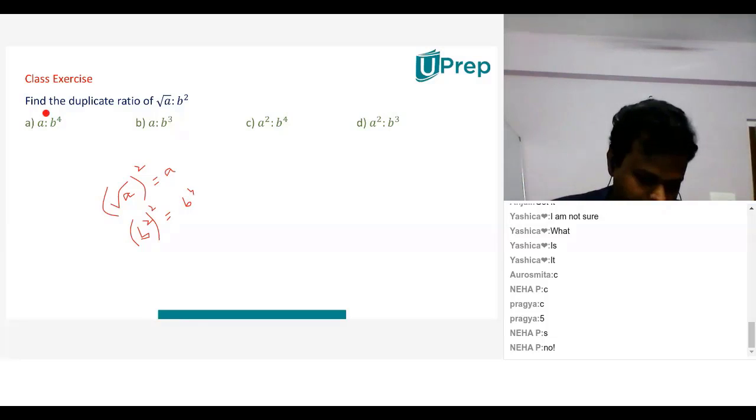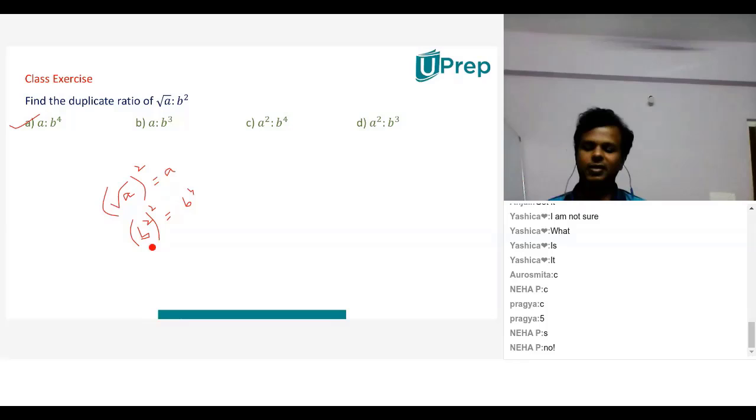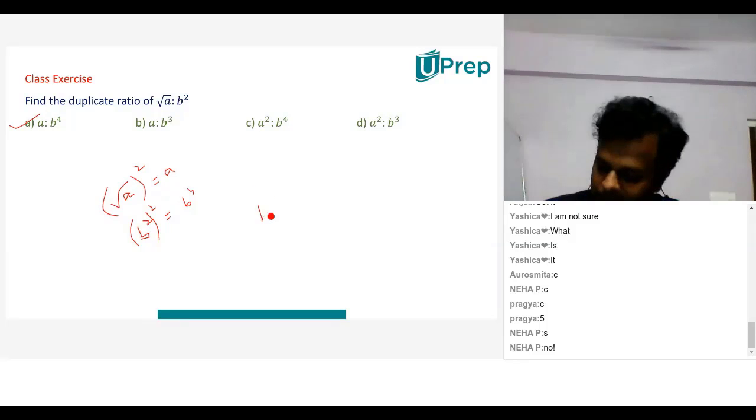And b square whole square will be b power four. So the answer in this case will be first option. So when I say b square whole square, that means what I'm multiplying b square by itself. So b square into b square would be b power four. So children, the answer in this case will be option A.